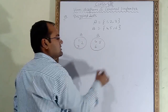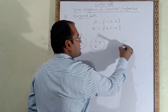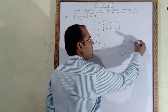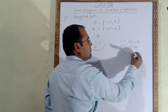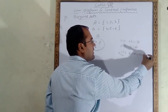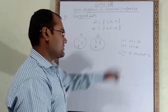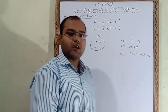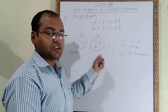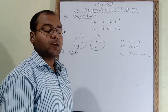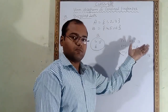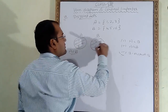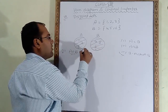For a disjoint Venn diagram, draw two separate circles that do not touch. Write 1, 2, 3 in circle A and 4, 5, 6 in circle B. Again there are three cases: how to show A union B, A intersection B, and A minus B or B minus A. For A union B, shade both circles entirely — A elements also and B elements also.